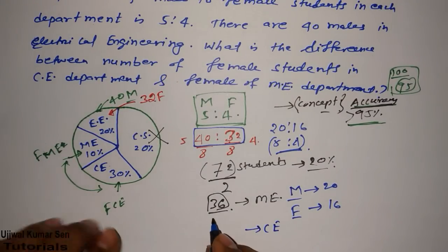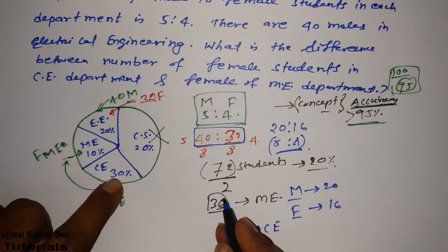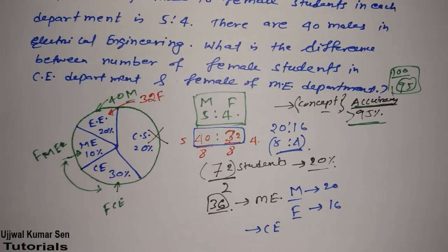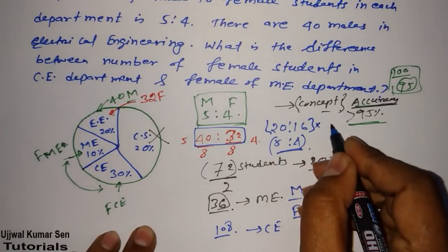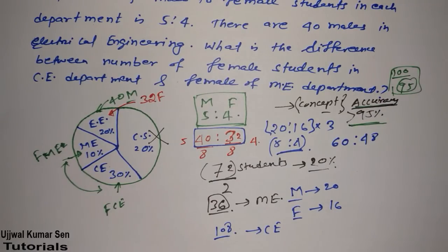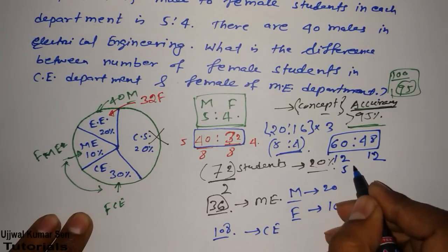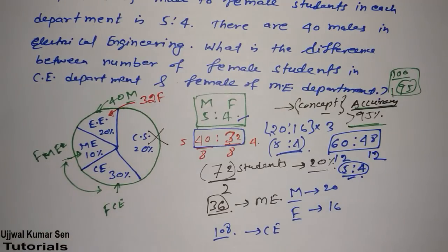Now for civil engineering, which is 30 percent: since 20 percent is 72 and 10 percent is 36, then 30 percent is 108 students. Applying the 5 to 4 ratio to 108 — multiplying the electrical ratio by 3 gives 60 to 48. To verify: dividing 60 and 48 by 12 gives 5 to 4, which confirms the ratio is correct.